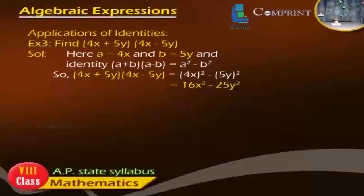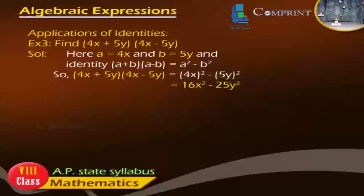Example 3: Find (4x plus 5y)(4x minus 5y). Solution: Here A equals 4x and B equals 5y, using Identity 3: (A plus B)(A minus B) equals A² minus B². So (4x plus 5y)(4x minus 5y) equals (4x)² minus (5y)², which equals 16x² minus 25y².